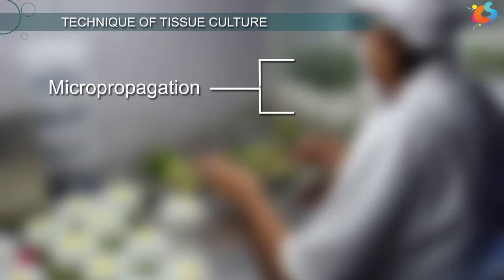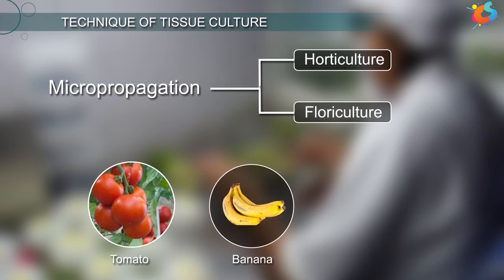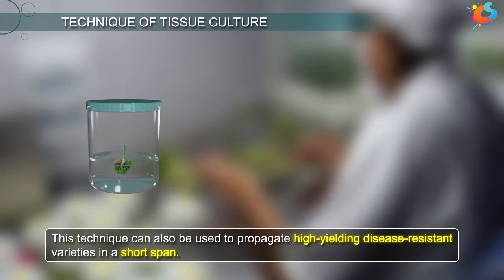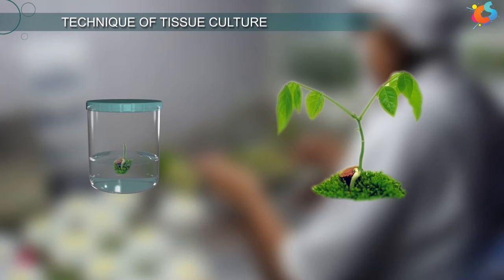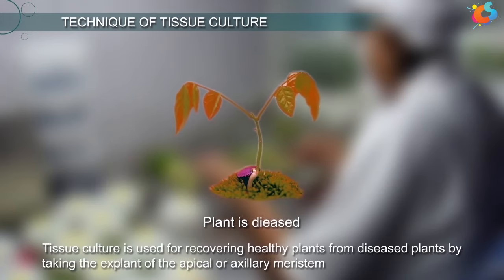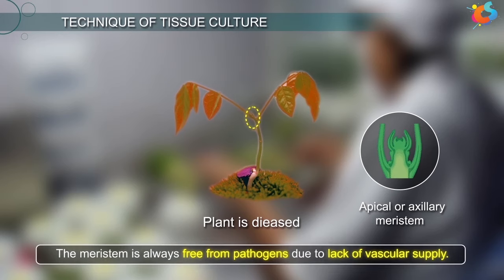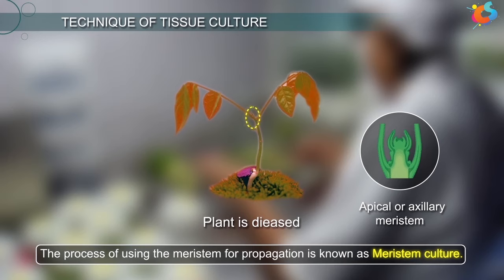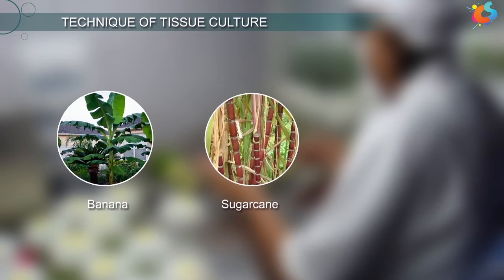Micropropagation is extensively used in horticulture and floriculture and is employed in the large-scale production of tomato, banana, apple, etc. This technique can also be used to propagate high-yielding disease-resistant varieties in a short span. Even when a plant is diseased, tissue culture is used for recovering healthy plants by taking the explant of the apical or axillary meristem. This is done because the meristem is always free from pathogens due to lack of vascular supply. The process of using the meristem for propagation is known as meristem culture, and it has been successfully carried out in plants such as banana, sugarcane, and potato.